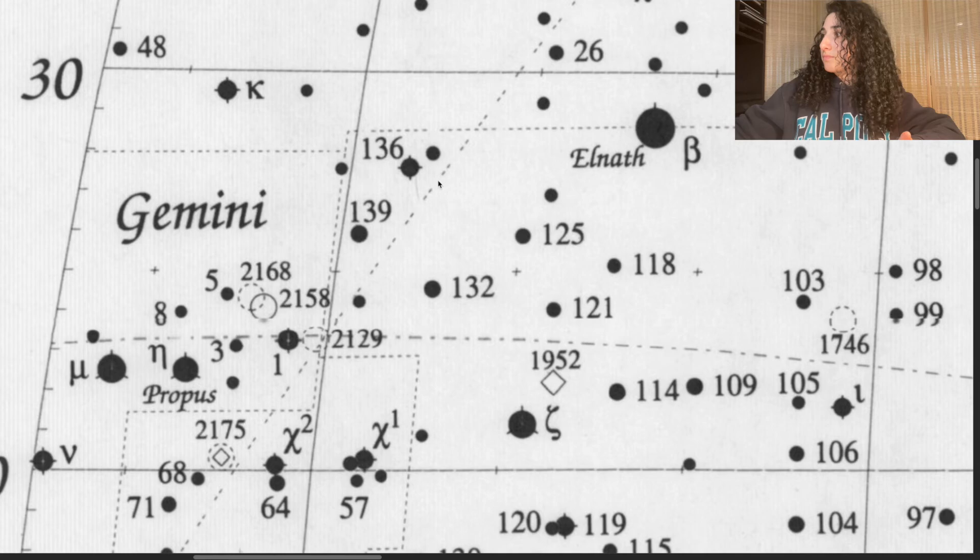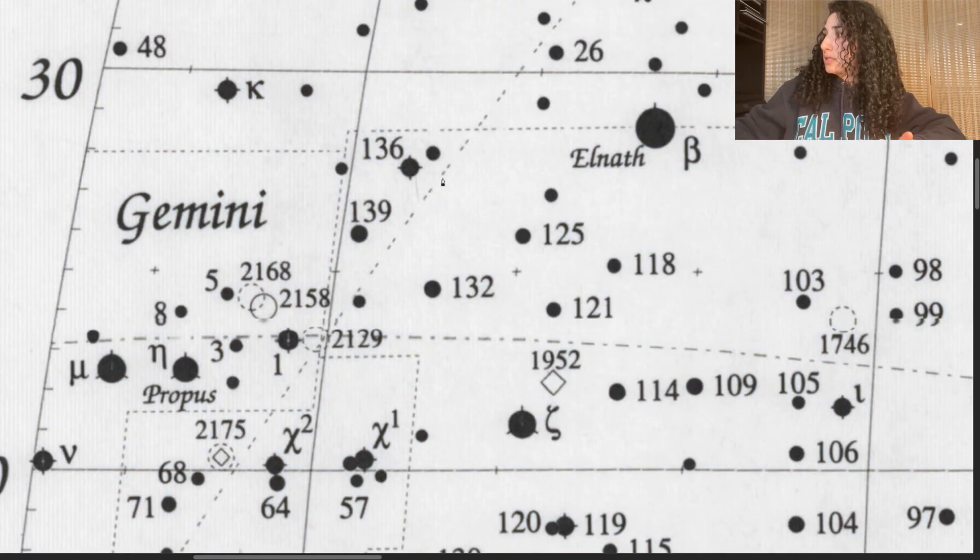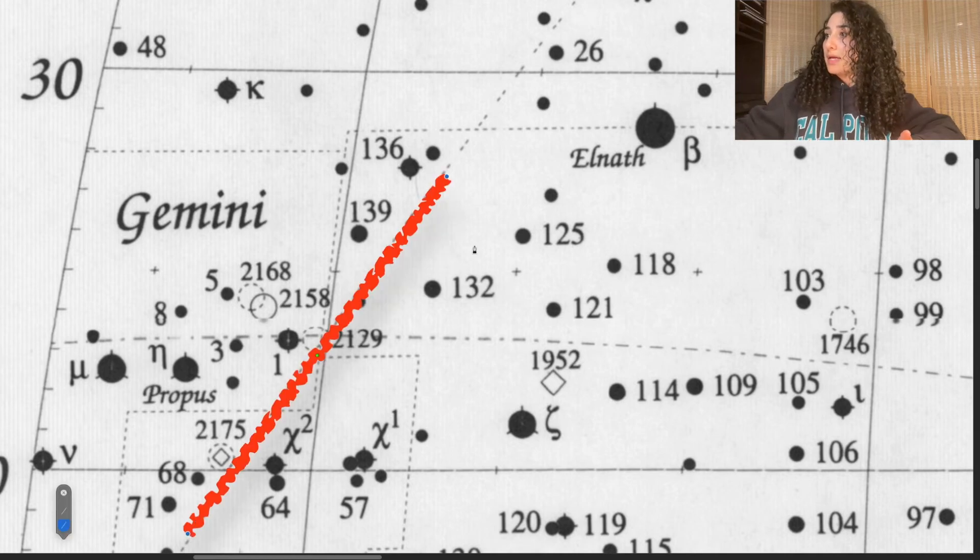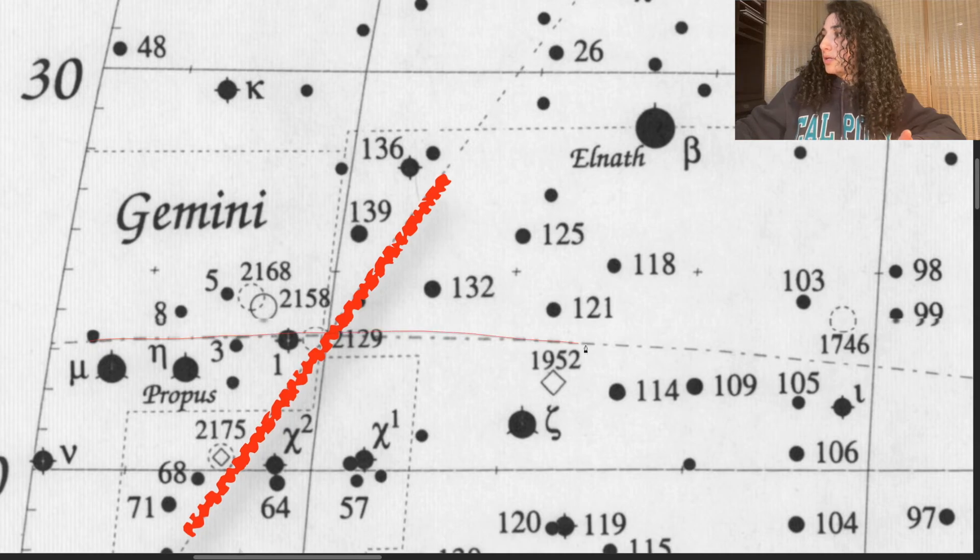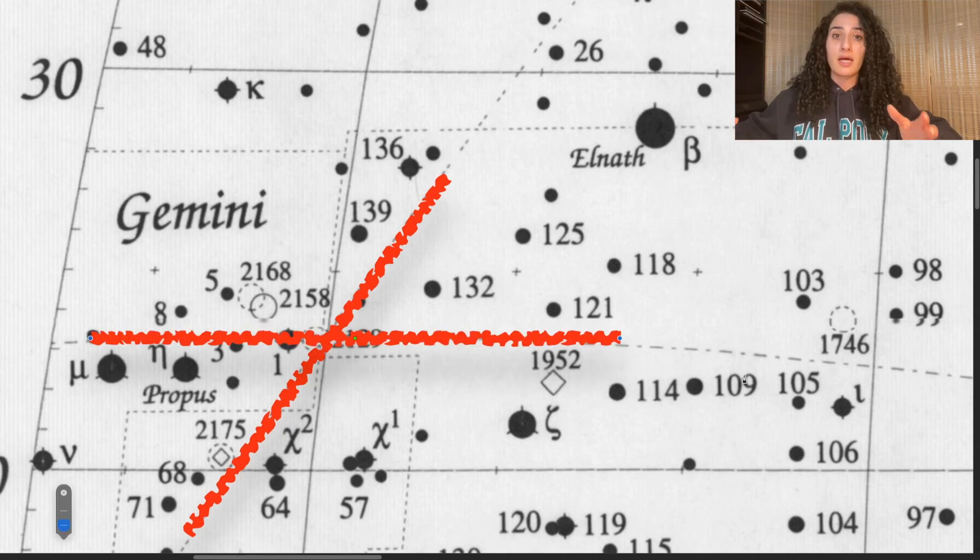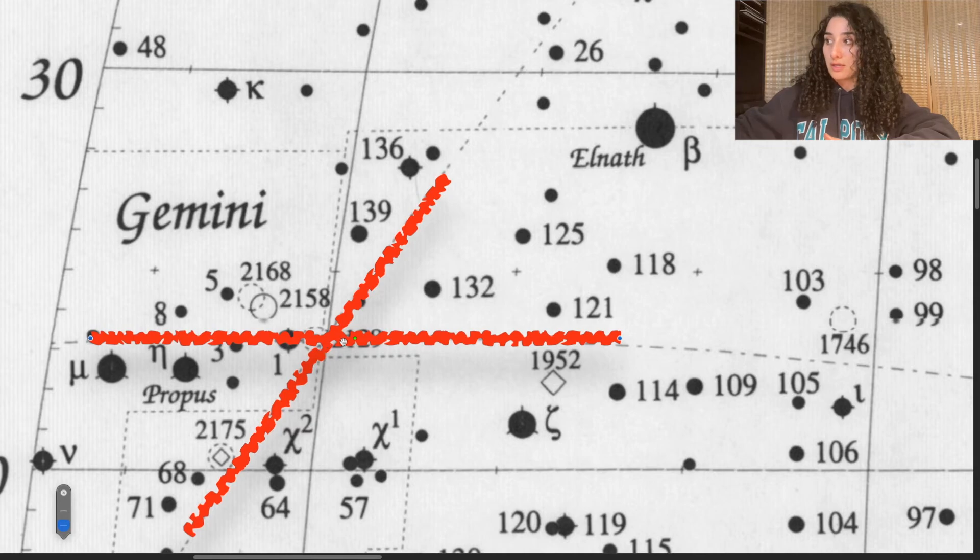This is the line that represents your galactic equator, and this is the curve that represents your ecliptic. Now they're both curves, but because we are so zoomed in, they might appear as lines in this portion, but some of it does look more like a curve.